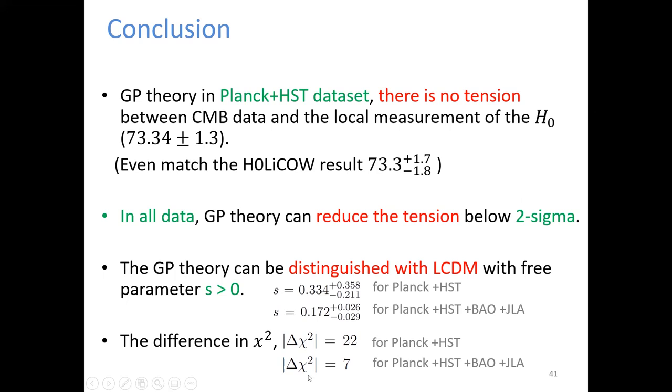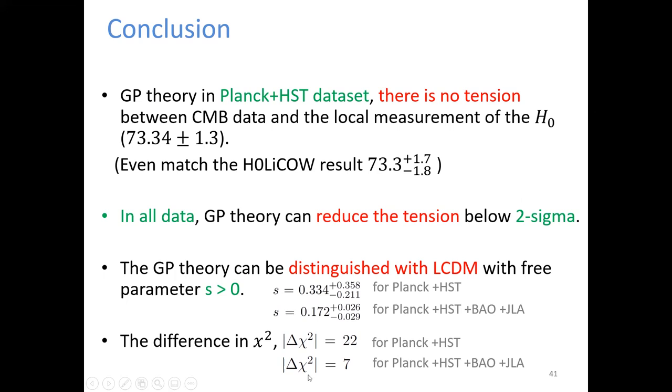Now is the summary and outlook. H0 problem is very important in cosmology, maybe pointing to new physics beyond the lambda CDM. We have provided the generalized Proca theory to solve the H0 problem and found that our model has a better fit result to the current data site than lambda CDM. We hope the new data from lensing and the new method to address the supernova data will give us new insight on the H0 problem. Thank you very much for your attention.